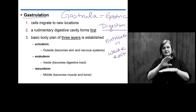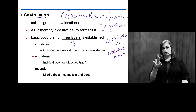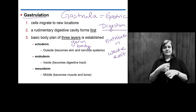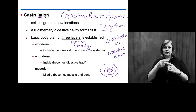We'll form three layers, known as germ layers or body layers. Germ layer does not refer to any infection — don't be concerned. What we're looking at instead is the formation of a gut track in the center with layers surrounding.